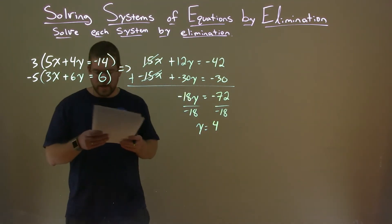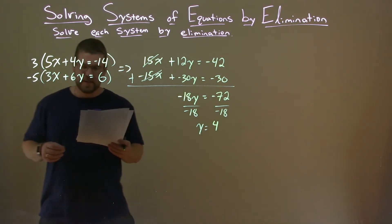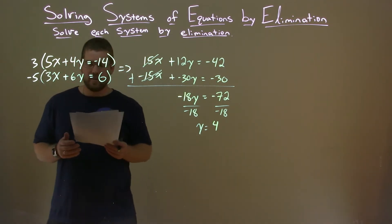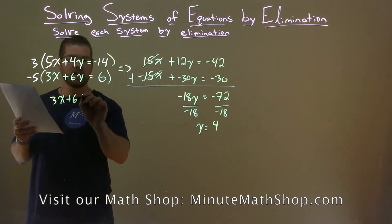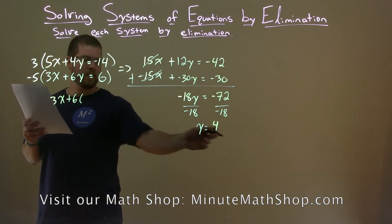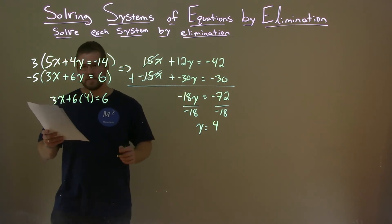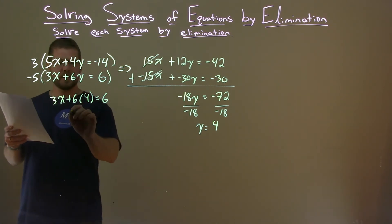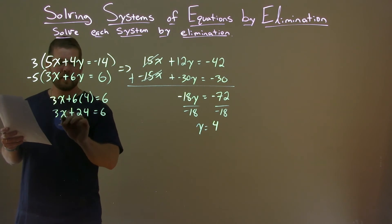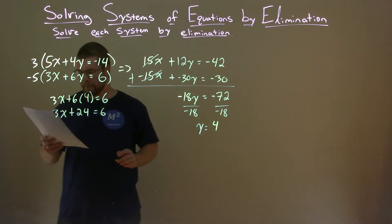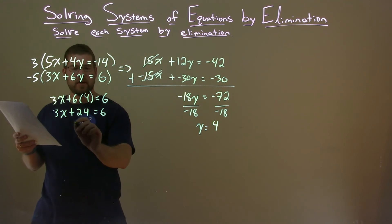We take that information and we need to plug that back into one of our equations and solve for x. I think the second one is the easiest one. So, 3x plus 6 — instead of y, we put a 4 — equals 6. 6 times 4 is 24, and we have 3x right there. Now we've got to get x by itself.